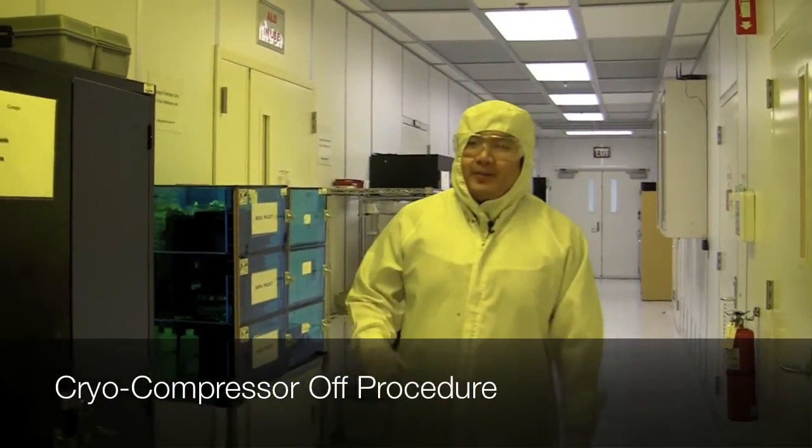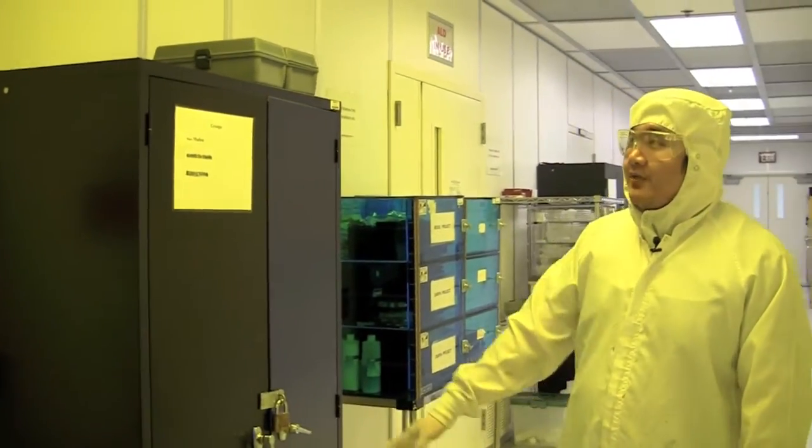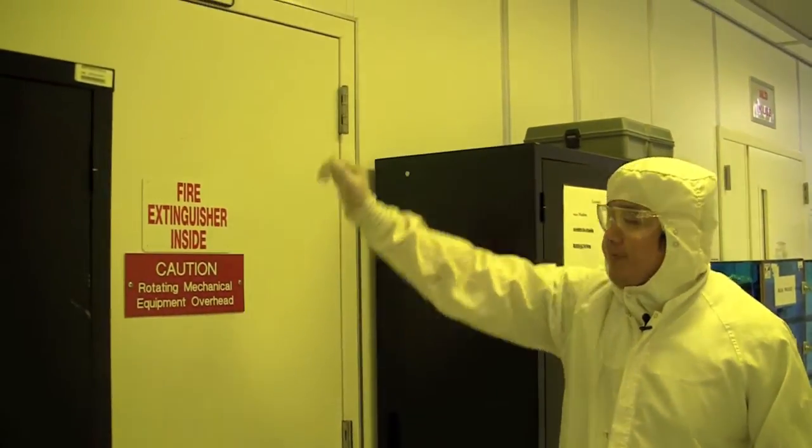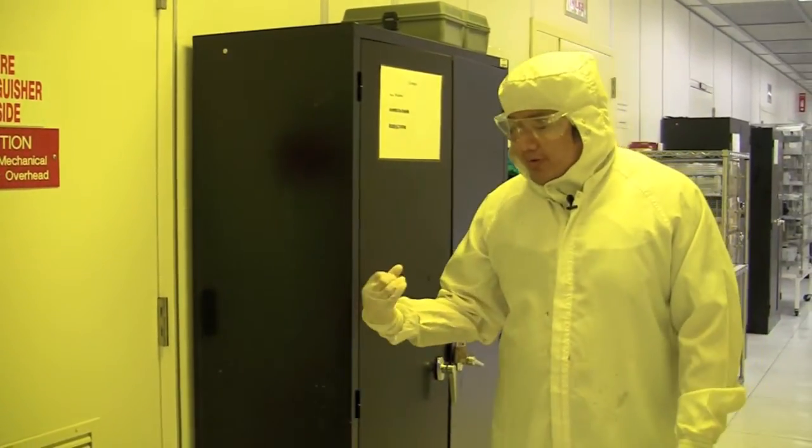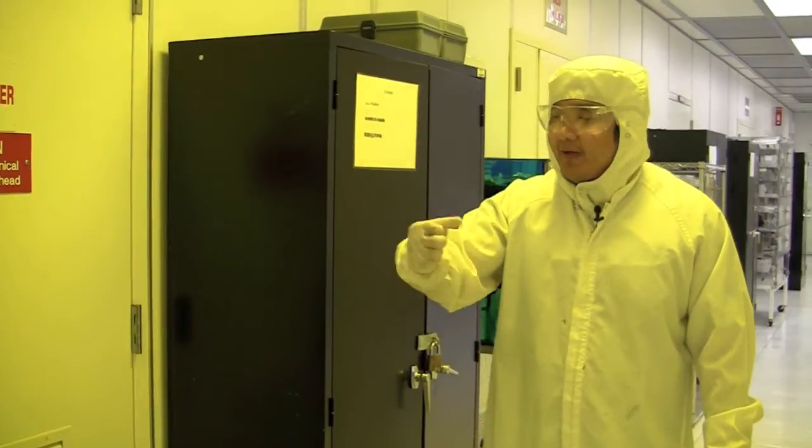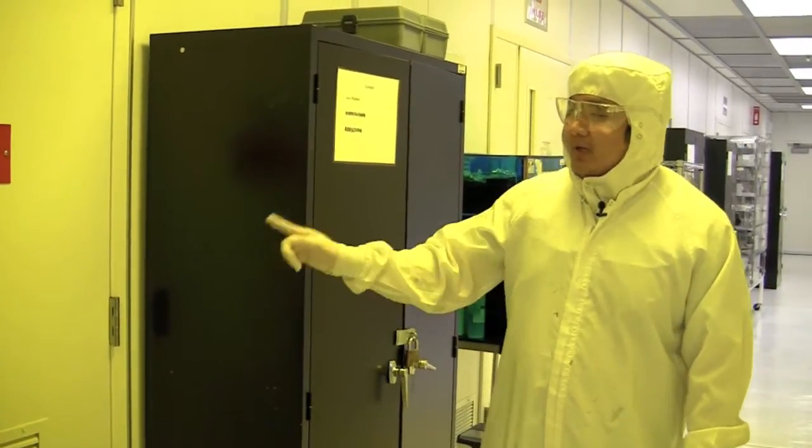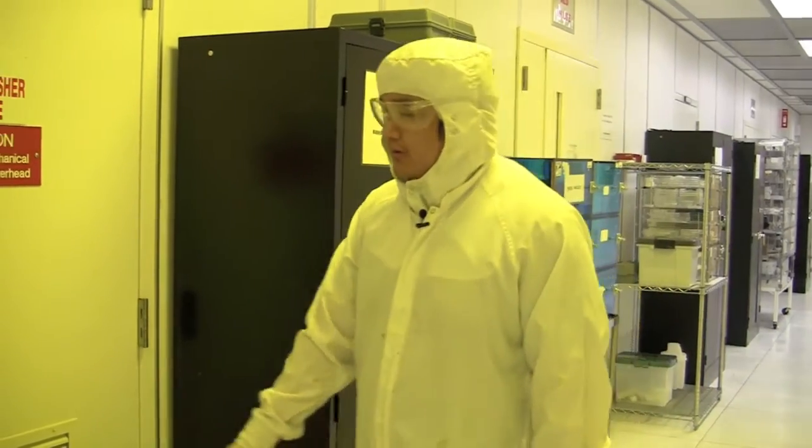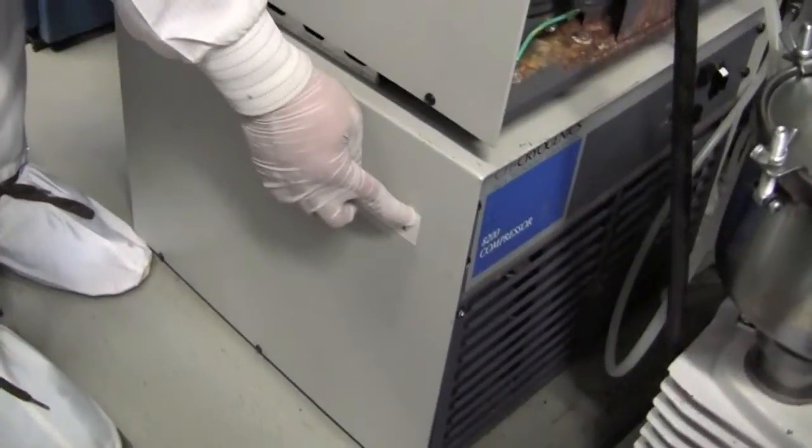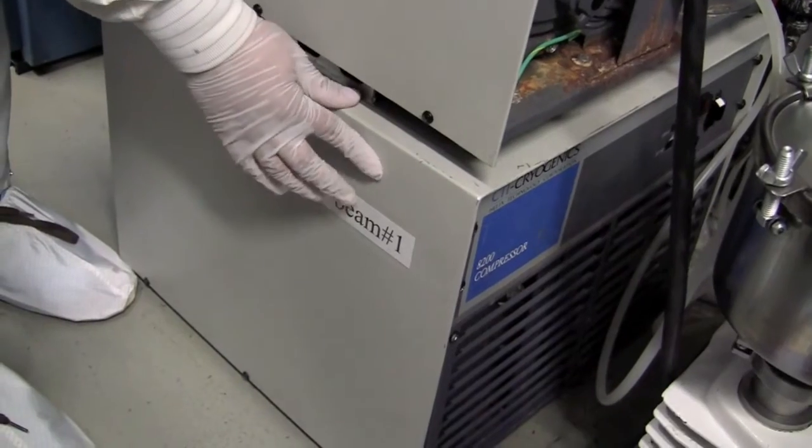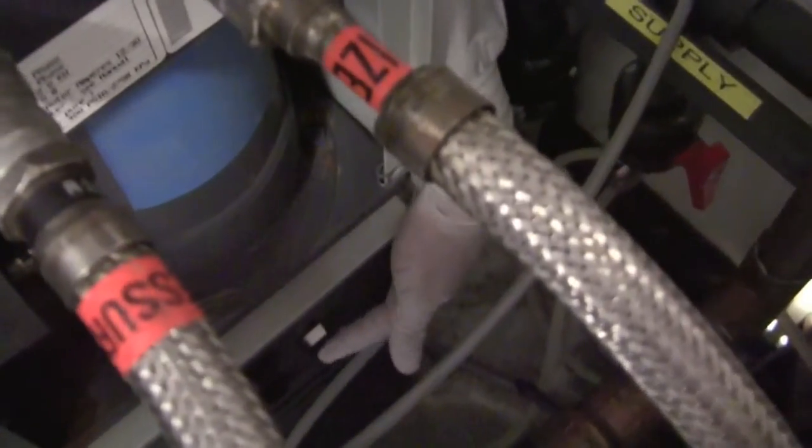In case the cryo pump has been dumped, you want to make sure you turn the compressor off. The compressor is found in this chaser's room 2337 and before you go in you want to make sure there's no odors or chemical spills. If there is then you will notify staff but it looks like it's fine to go in. This is the compressor for the E-beam 1 cryo pump, so it's labeled E-beam 1. If the cryo pump is dumped you need to turn the switch off, and then you notify staff and let them know that the system has been dumped.